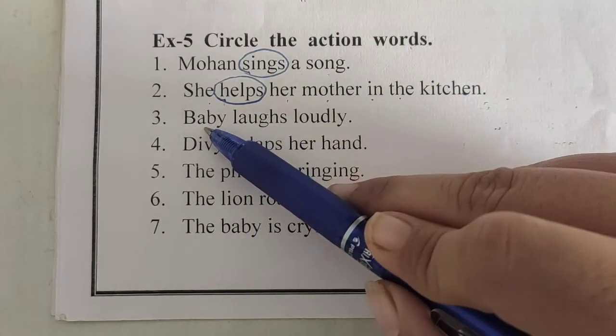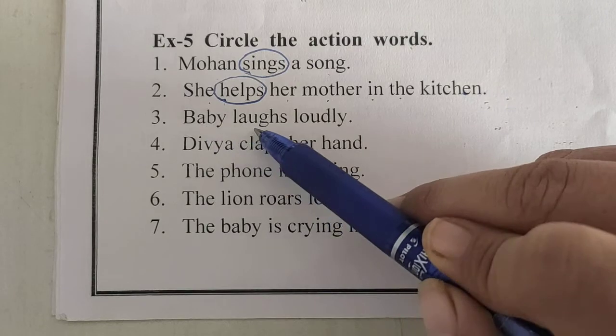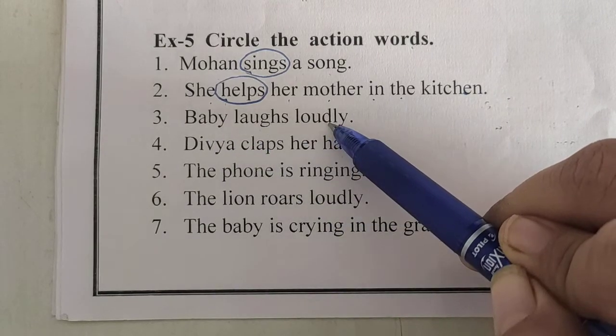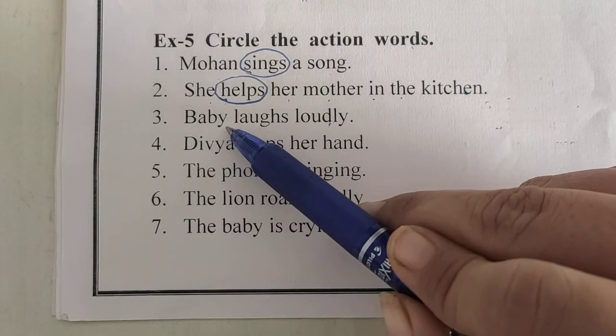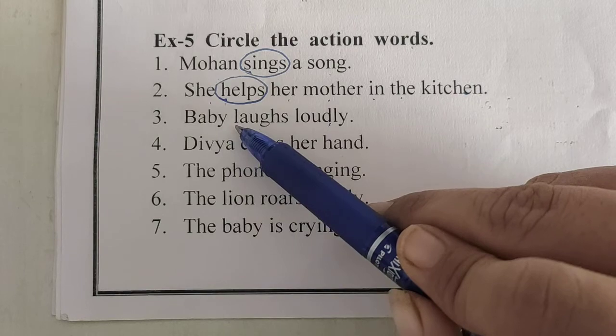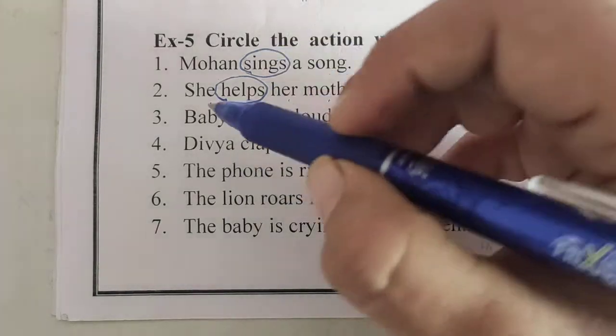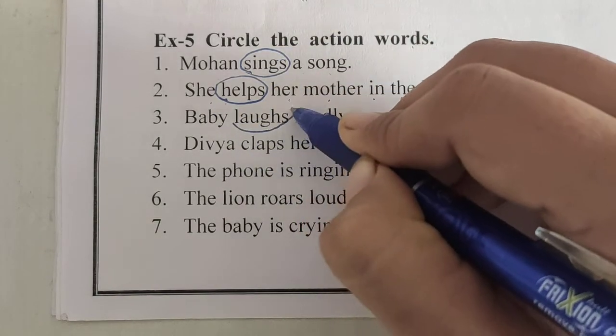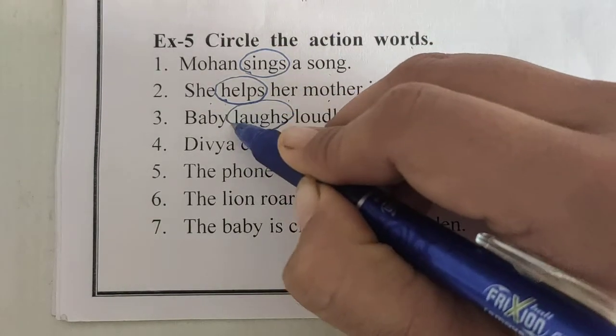Third: Baby laughs loudly. What activity is performed by the baby? Baby laughs. So, circle the action word 'laughs'.